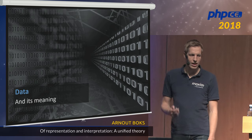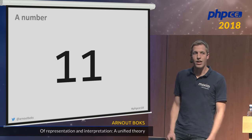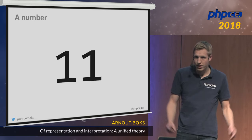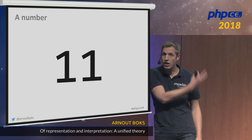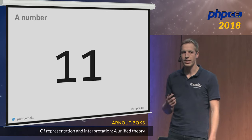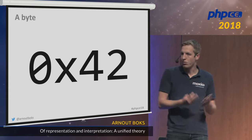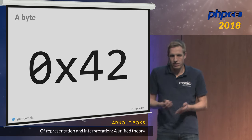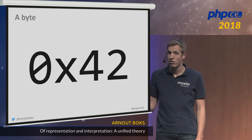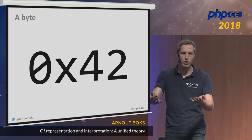Let's look at some examples of data. Consider a number — what number is this? It might be 11 if written in decimal, 3 if written in binary, 9 in octal, or 17 in hexadecimal. We need to know how we interpret this number to know its value. Similarly, suppose we have a byte in memory: if it's an integer it may be 66, but if it's a character encoded as ASCII it might be the letter 'B', or it might be part of a UTF-8 sequence or a floating-point number.